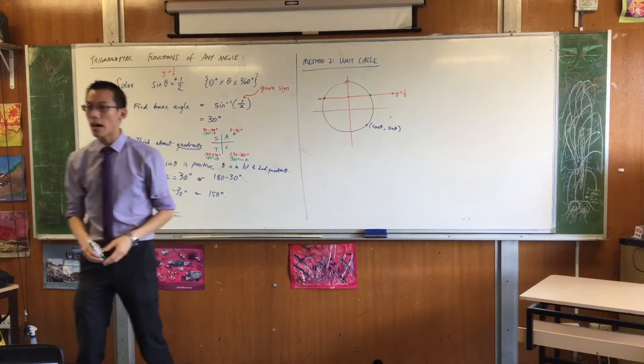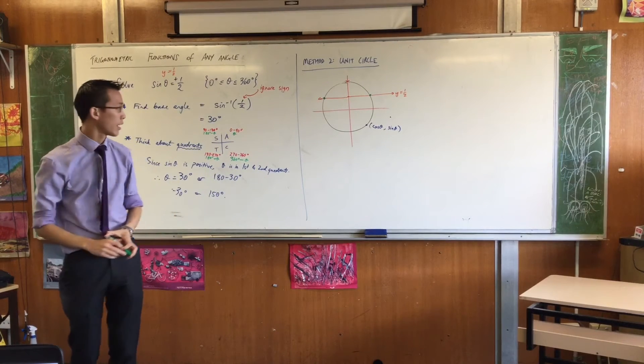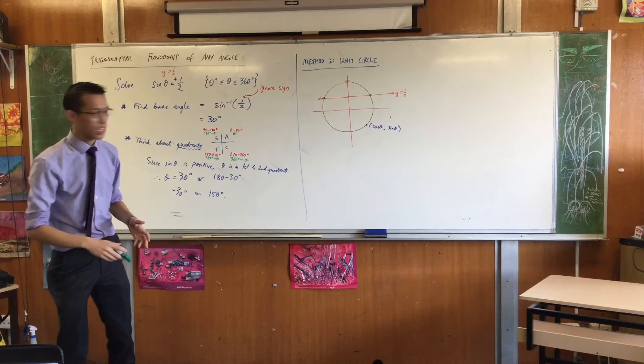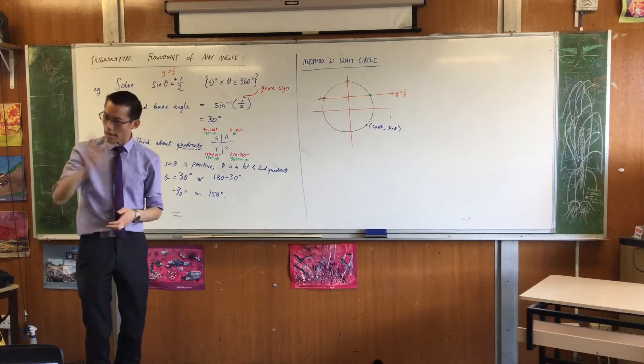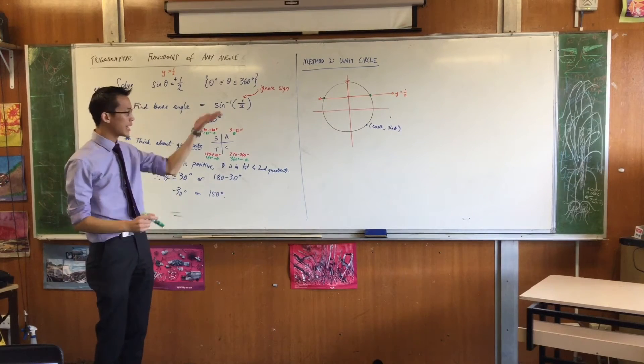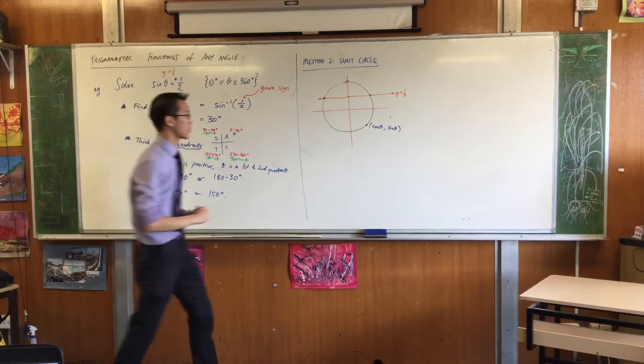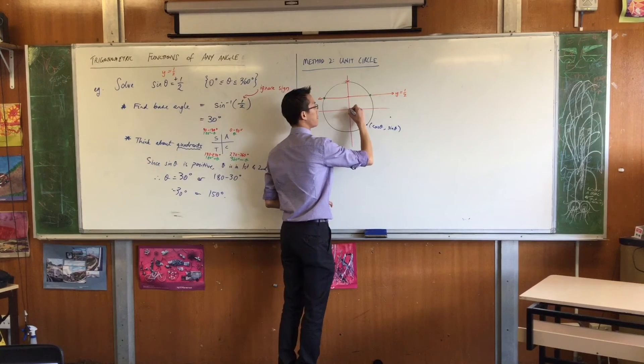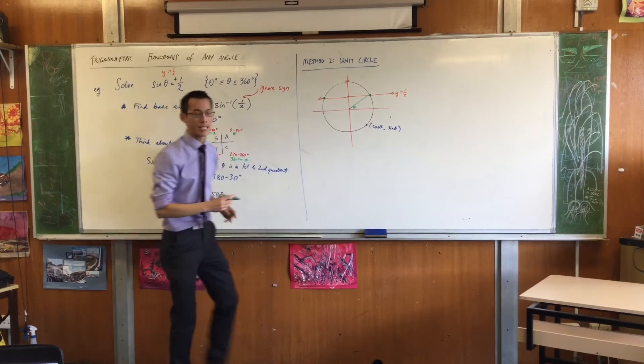Those two spots are my solutions. Okay? So all I have to do is try and think about what angle rotating around the unit circle will get me to those two spots. Okay? So here's the first one. Theta. Right?